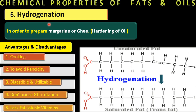Advantages of hydrogenation: good cooking taste, avoidance of rancidity (since the higher the degree of unsaturation, the greater the rancidity), ghee is more digestible, and does not cause GI irritation. The single drawback is that saturated fats cannot take up fat-soluble vitamins — like vitamin E and vitamin K — the way unsaturated fats can. This is the only drawback of saturated fats.